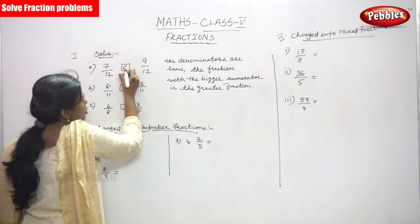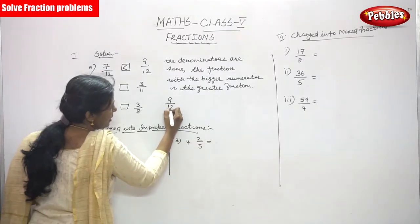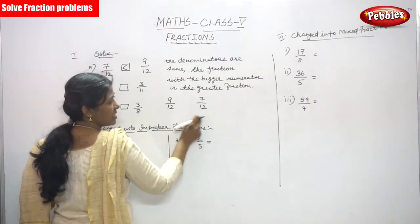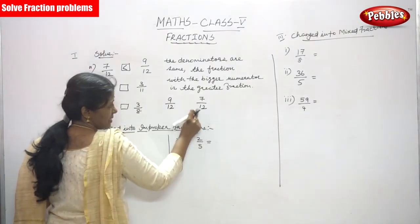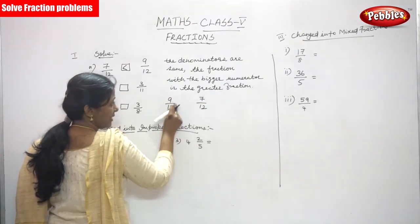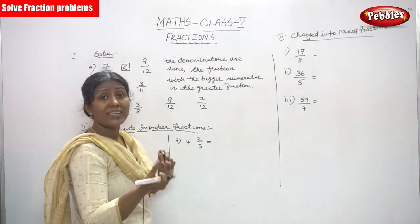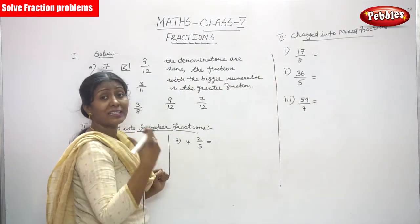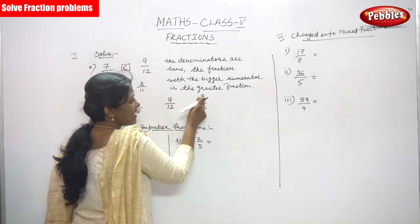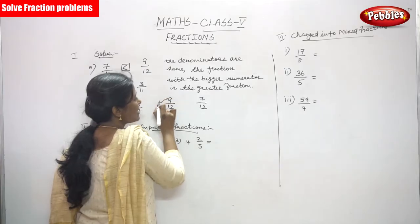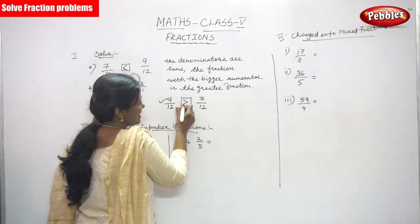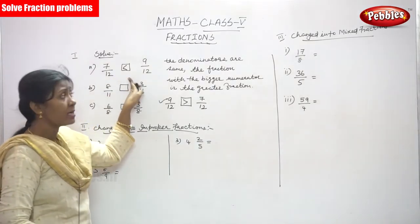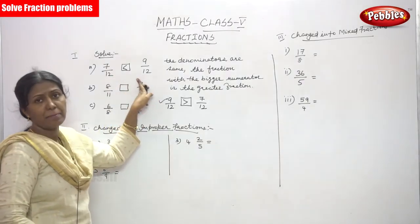So 7 by 12 is less than 9 by 12. If written the other way — 9 by 12 and 7 by 12 — the denominators are still the same, so you look at the numerators: 9 and 7. The fraction with the bigger numerator, 9, means 9 by 12 is the greater fraction. So you put the sign: 9 by 12 is greater than 7 by 12, or equivalently 7 by 12 is less than 9 by 12.